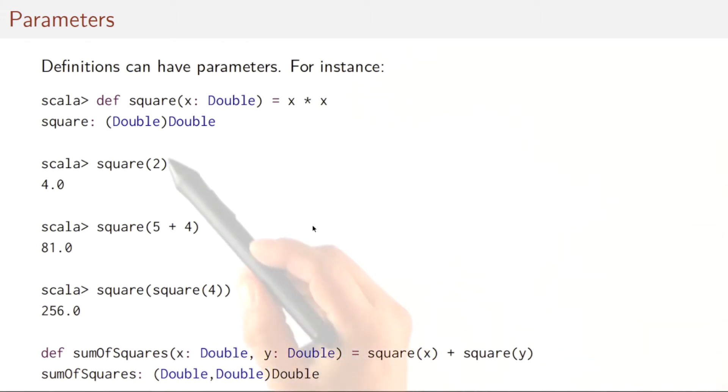Definitions can also have parameters. For instance, we can define a square function by writing def square. Then comes the parameter x of type double. And then comes the right-hand side, x times x. The right-hand side refers to the parameter x. And the evaluation then would yield the expected square of two would give four, square five plus four would give 81. We can also have parameterized definitions that refer to parameterized functions as in the sum of squares function here. That takes two parameters, x and y of type double. And it computes the square x and square y and sums them.